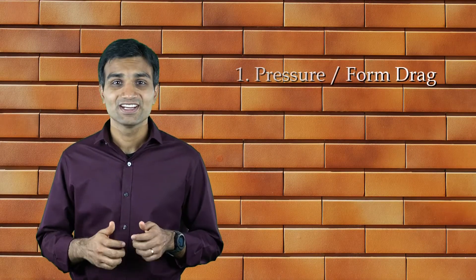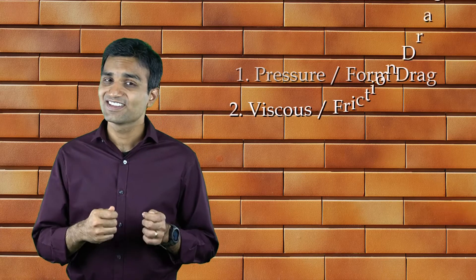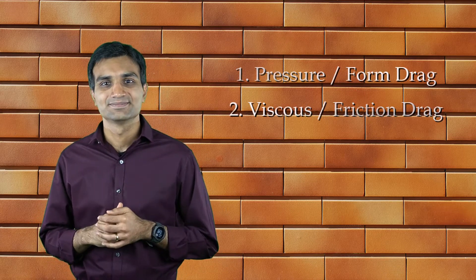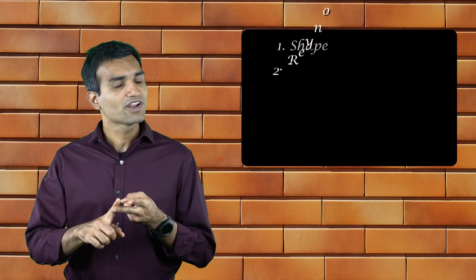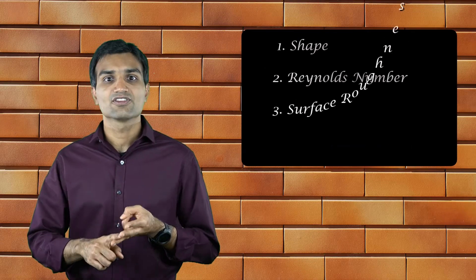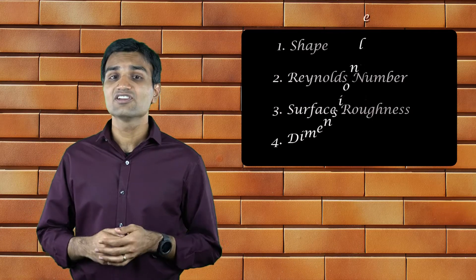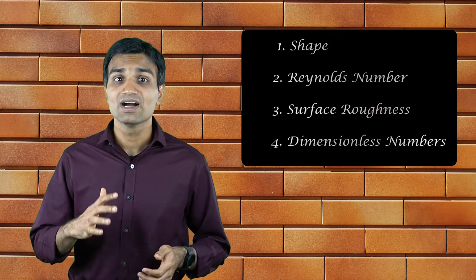The fluid drag has two components, pressure or form drag and viscous or friction drag. The overall value of the drag is the sum of these individual components and is primarily influenced by the shape of the moving body, the flow Reynolds number, surface roughness of the body and other dimensionless quantities such as Mach number and Froude number.